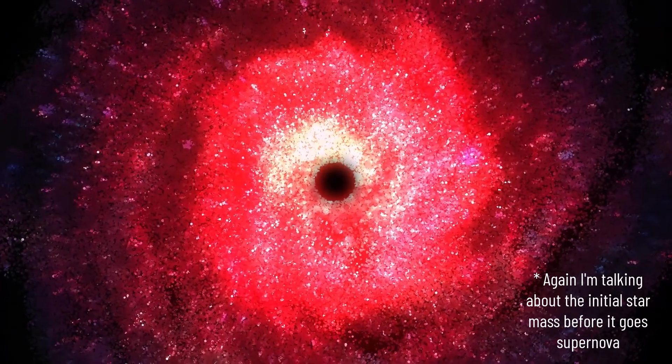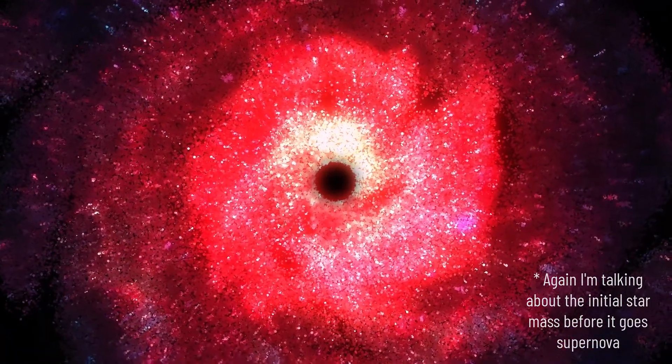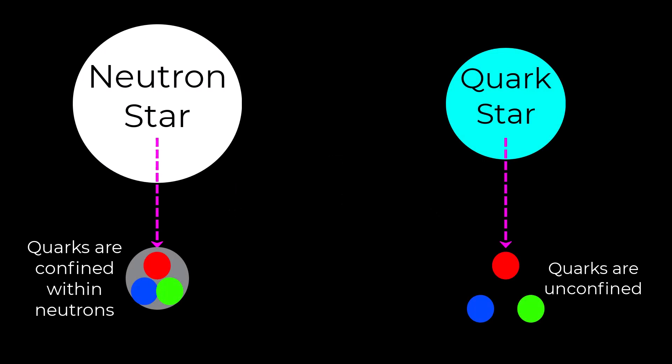Neutron stars can reach masses up to around 25 times that of the Sun before neutron degeneracy pressure fails to balance the inward gravitational force, and the object collapses into a black hole. At least, that's what we thought.